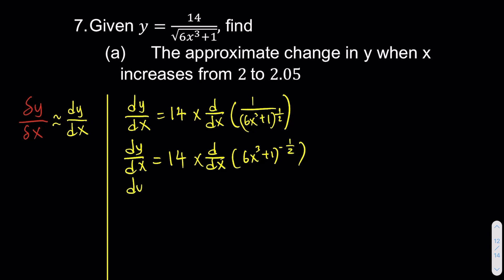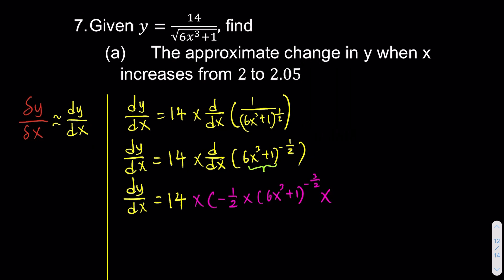Then we apply the chain rule: it's 14 times negative 1/2, then we bring the negative 1/2 down, the power reduces by 1 which gives negative 3/2. Then we multiply by the derivative of the inner function — don't forget the inner function — we need to take the derivative of it also. So the derivative of the inner function is going to be 18x².